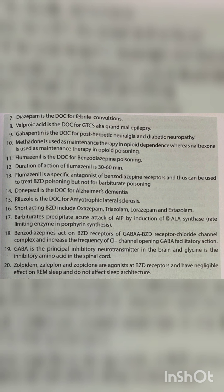Flumazenil is the drug of choice for benzodiazepine poisoning. Duration of action of flumazenil is 30 to 60 minutes. Flumazenil is a specific antagonist of the benzodiazepine receptor and thus can be used to treat benzodiazepine poisoning but not barbiturate poisoning.